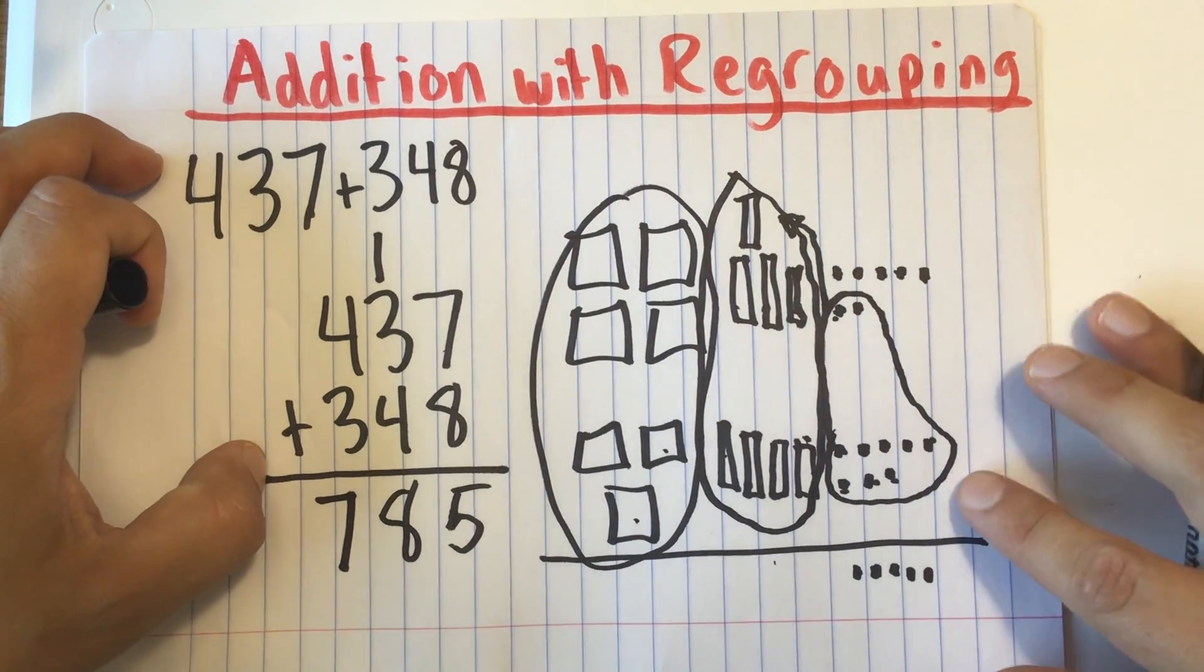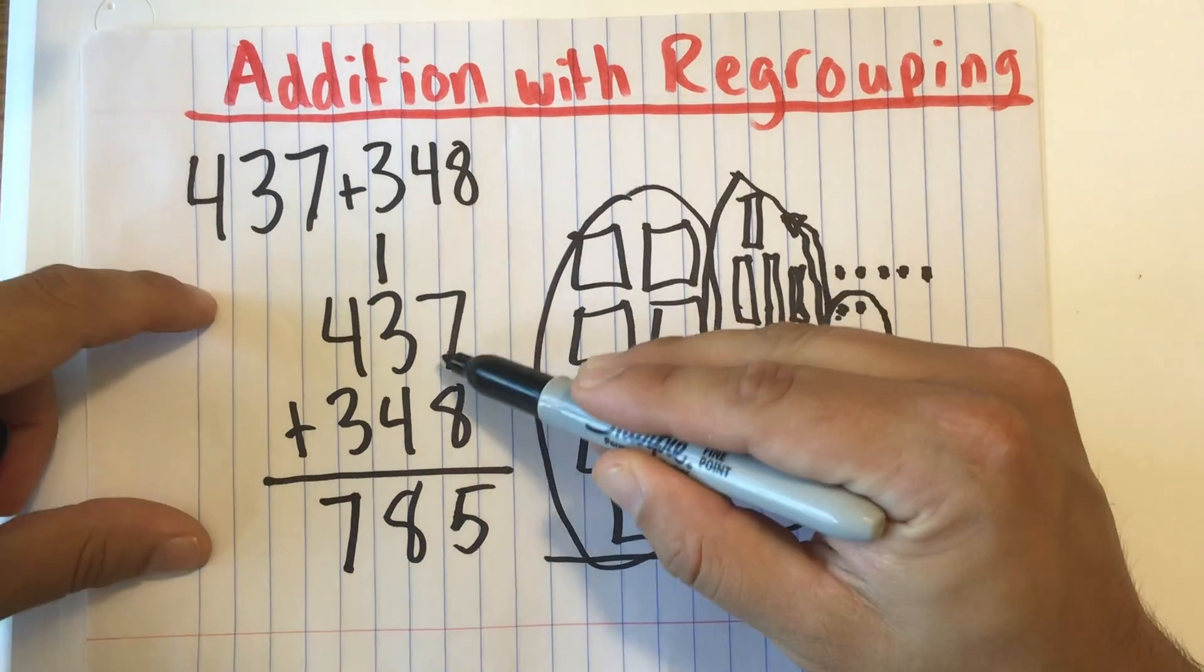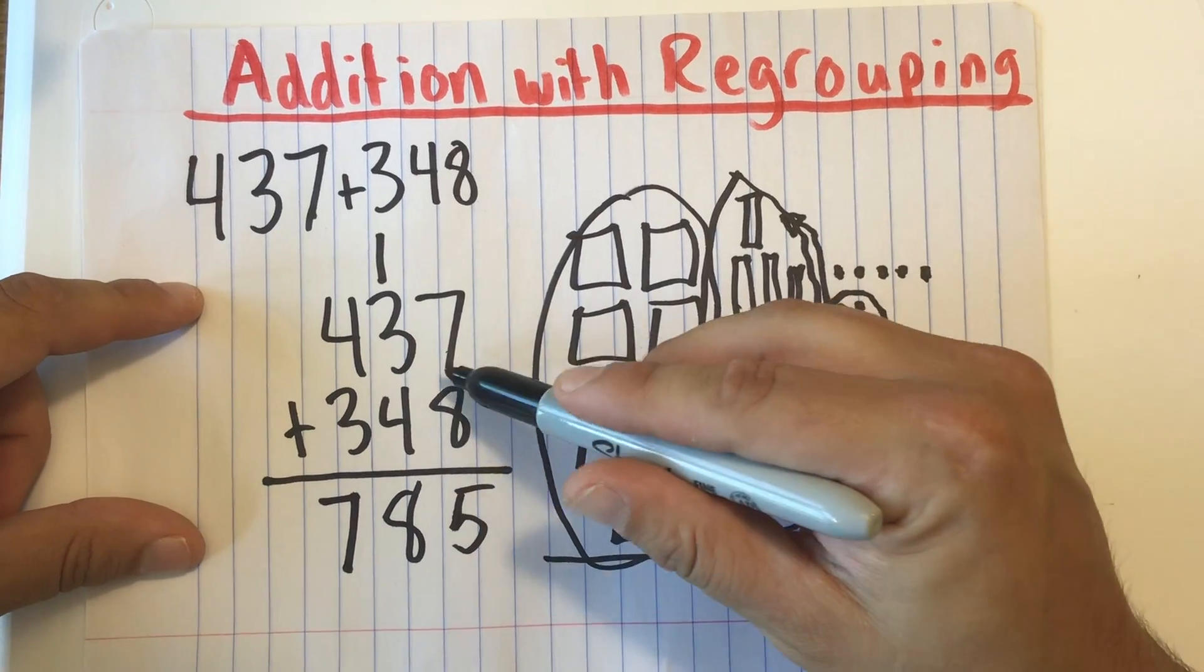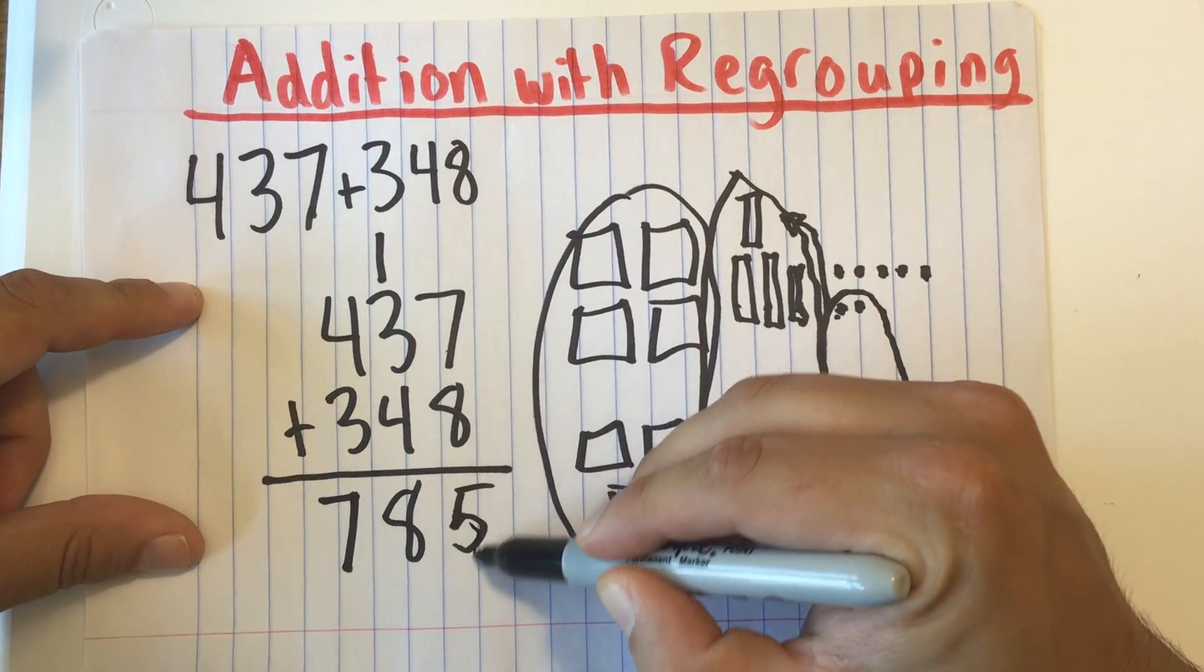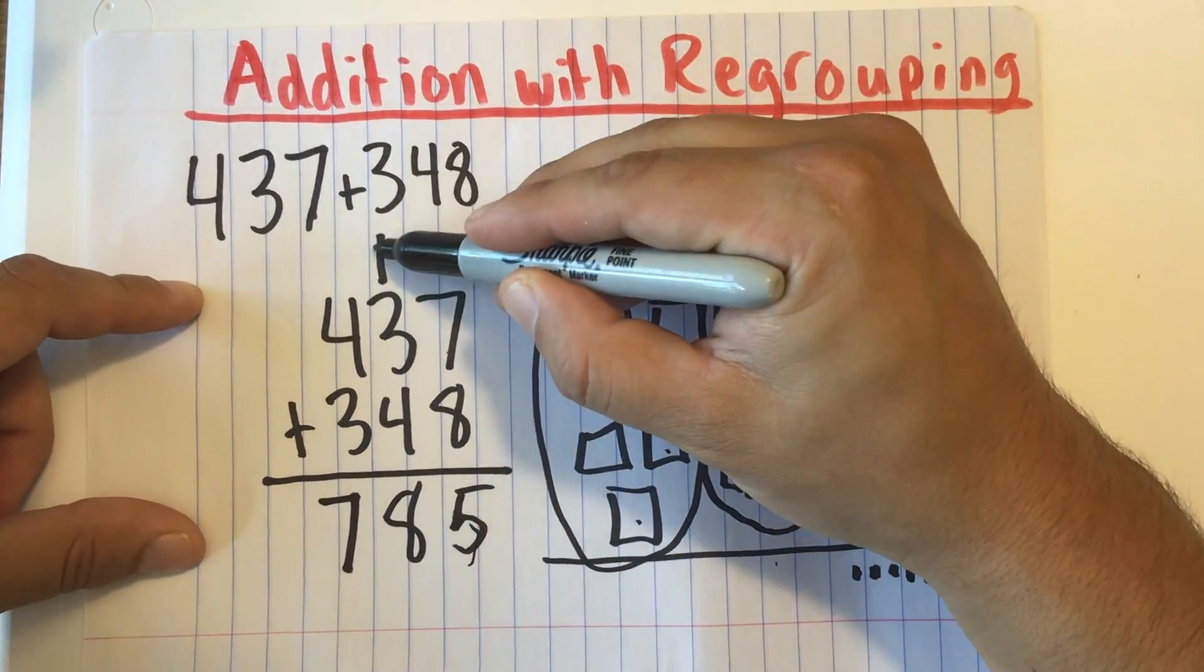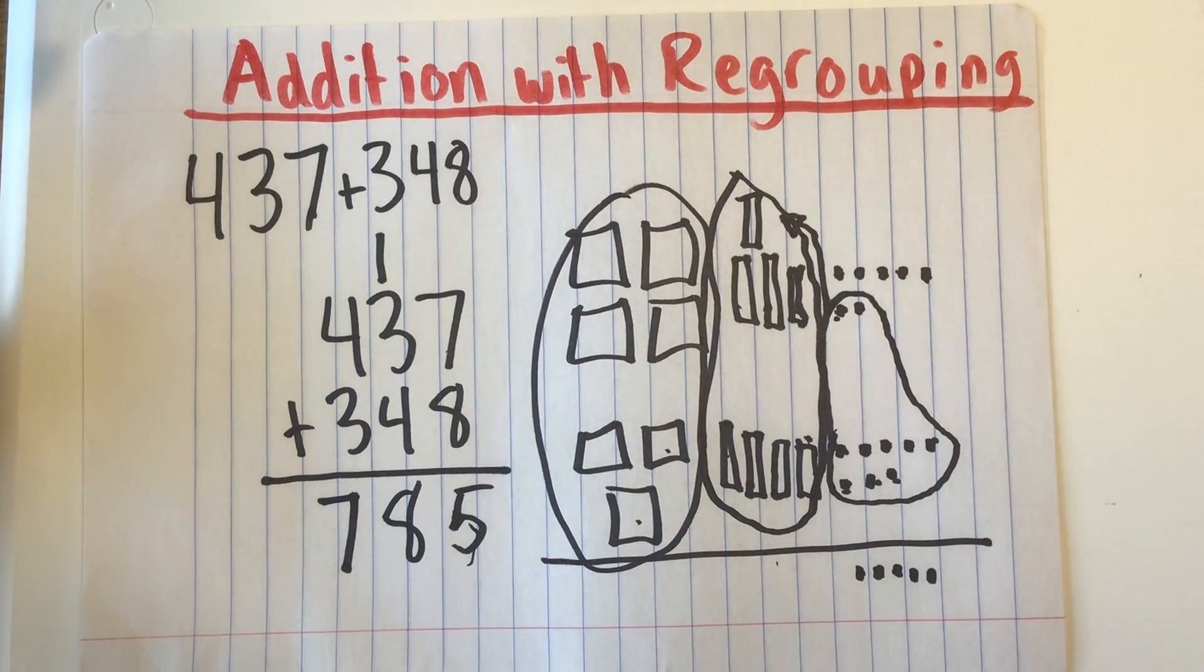So basically all we did there with the regrouping is 8 and 7 was 15. And 15 ones is 5 ones and 1 ten. And that is all for today. Thank you guys for watching. Bye.